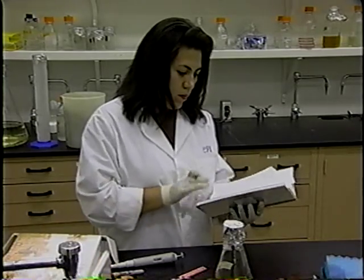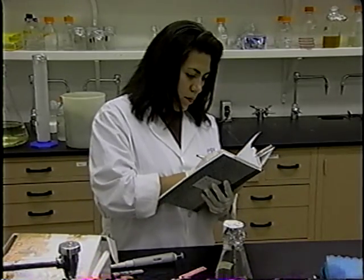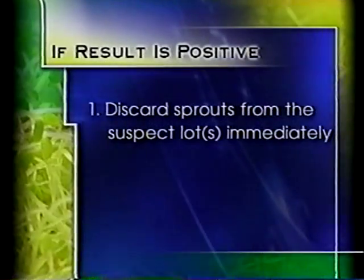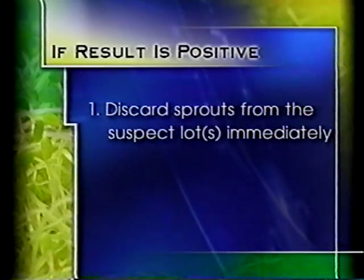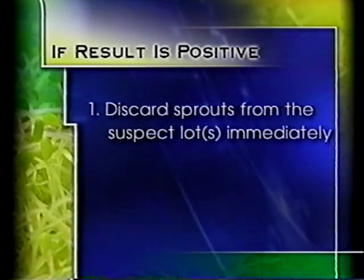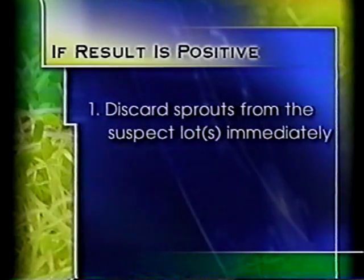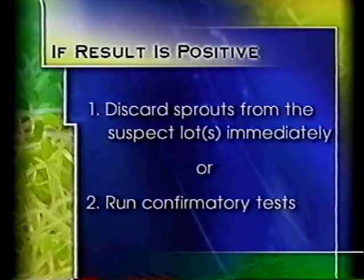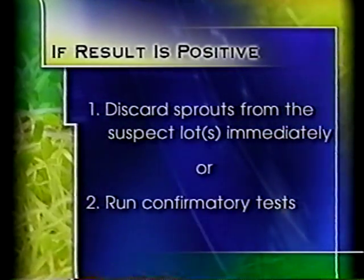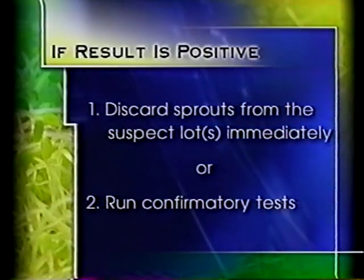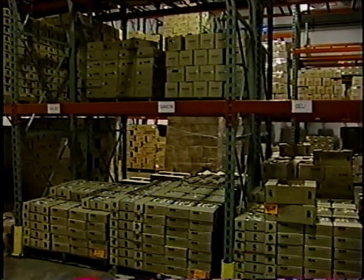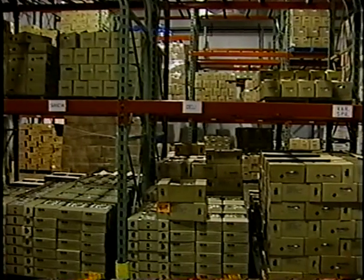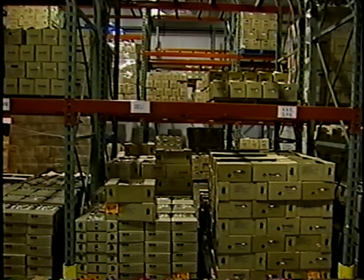The grower should decide on an action plan for dealing with positive results before a positive is found. Two options exist: the grower should either accept the results of the screening test as true and discard the sprouts from the suspect lot or lots immediately, or ask the testing laboratory to run confirmatory tests and destroy the batch only if the confirmatory tests are also positive. The product should be held while confirmatory testing is completed. Product with a positive screening test should not be shipped until confirmatory testing has been completed.